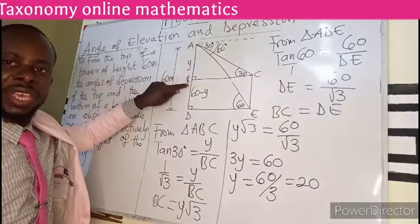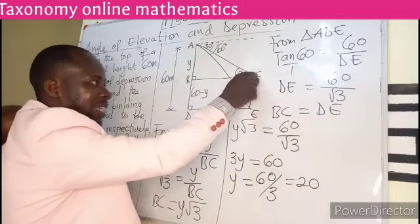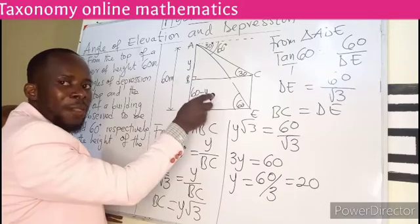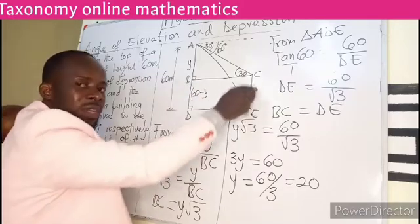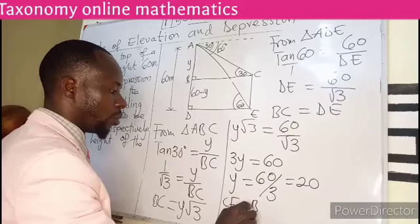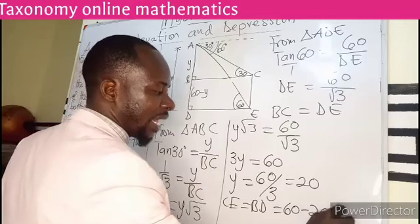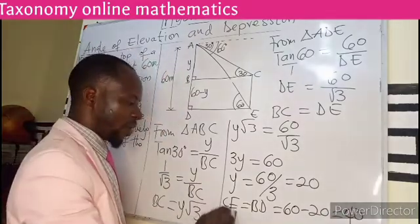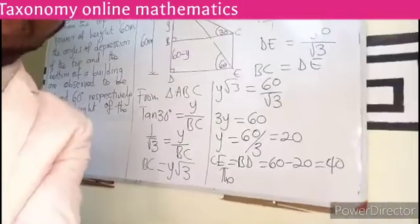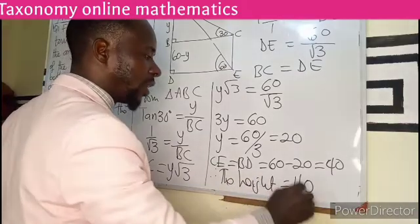From A to B is 20 meters. The question asks for the height of the building. We said CE is the height of the building, which equals 60 minus Y. So the height CE equals 60 minus Y, and Y is 20, giving us 40. Therefore the height of the building is 40 meters.